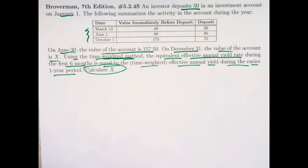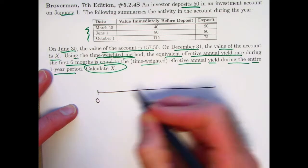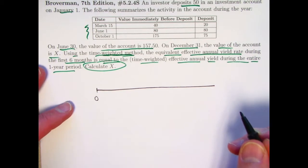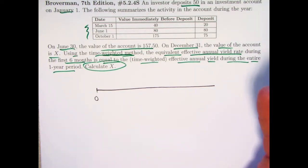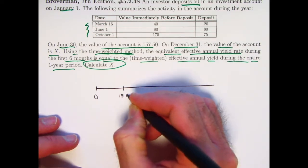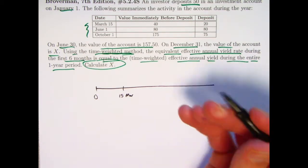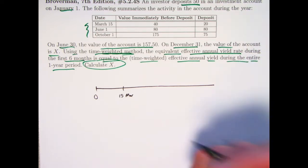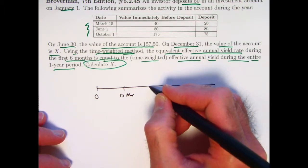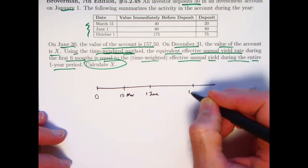Drawing a timeline, as in many situations, is very valuable here. We need to be a little careful, though actually it's not such a big deal with time-weighted returns. If we were thinking about dollar-weighted or money-weighted returns, the actual times would be important — for example, March 15th is technically 5/24ths of the way through a year. But since we're doing time-weighted methods, that's not important. So we place March 15th, June 1st, and October 1st on the timeline, and December 31st at the end.